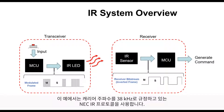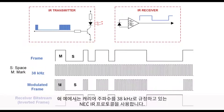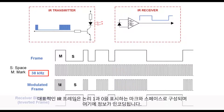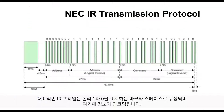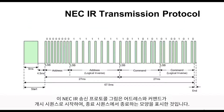In this case, we are going to use the NEC IR protocol that specifies a carrier frequency of 38 kilohertz. A typical IR frame comprises marks and spaces that represent logical ones and zeros, and the duration of the mark and space is where information is encoded. The NEC IR transmission protocol depicted here shows how addresses and commands are initiated through a start sequence and culminate in an end sequence.